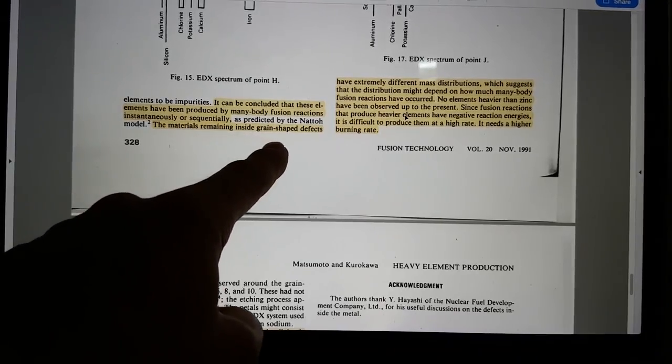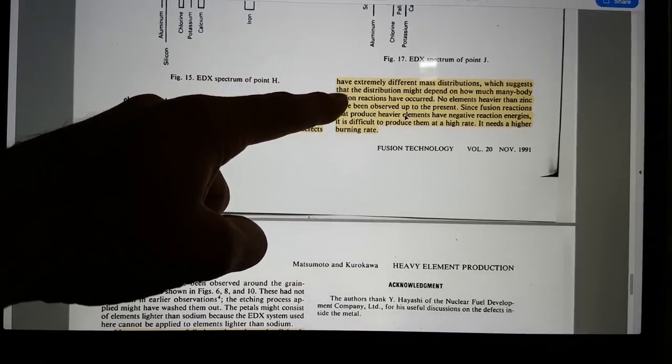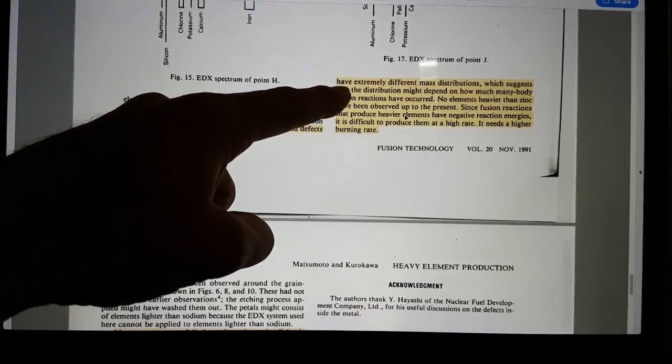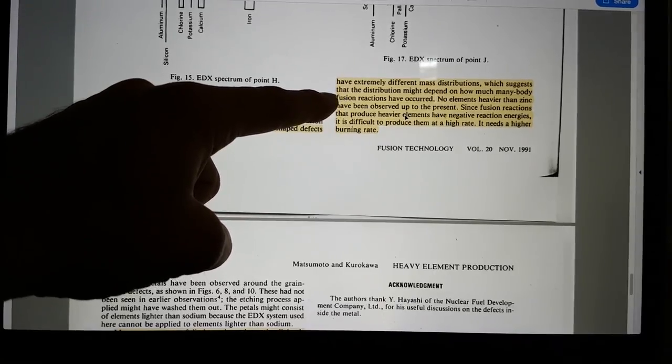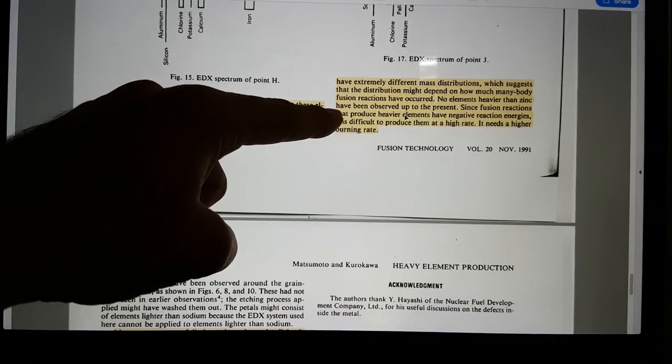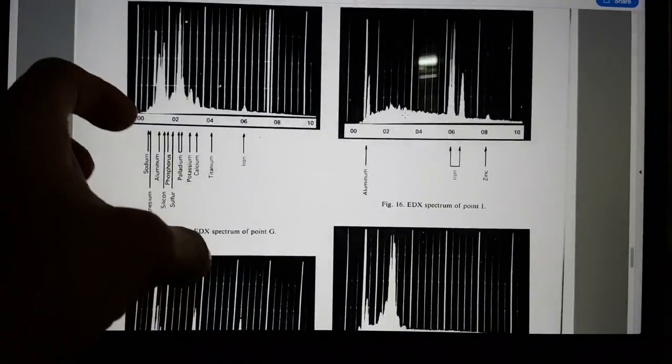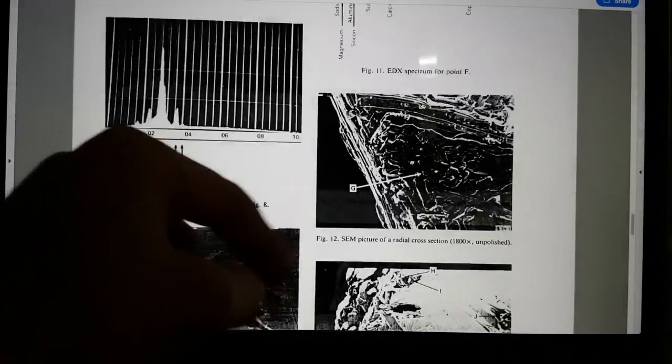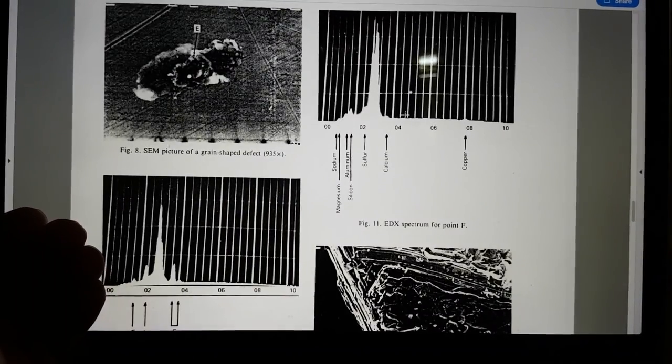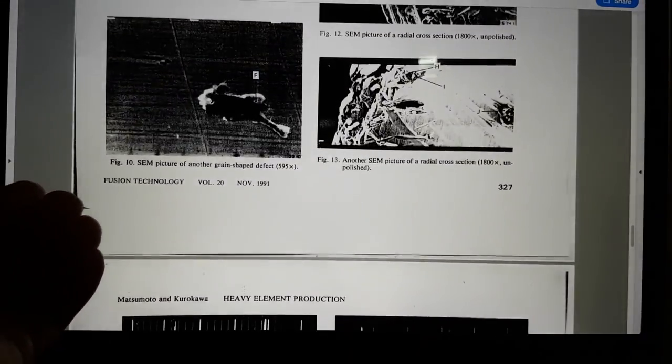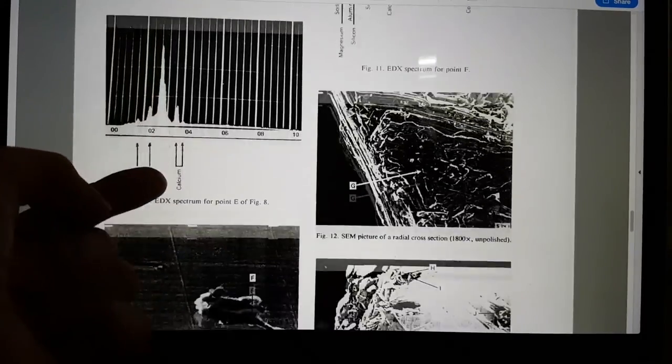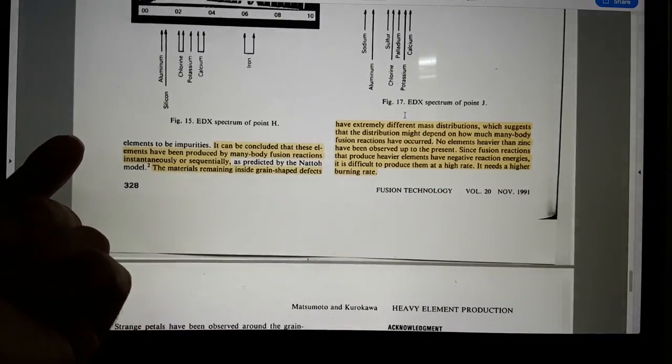The materials remaining inside the grain shaped defects have extremely different mass distributions. And here we have another of one of his great insights, which suggests that the distribution might depend on how much many body fusion reactions have occurred. So he's saying that if you look at the various grains, different grains have a different distribution of elements in them. So he's essentially saying that this one burnt in a different intensity to this. Yeah. I kind of agree with him.